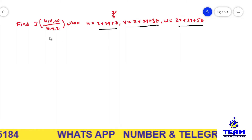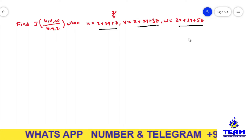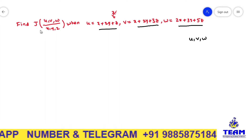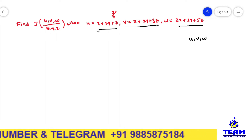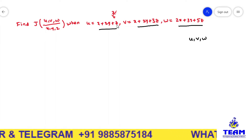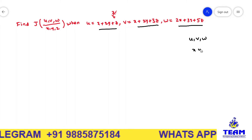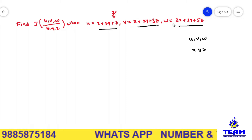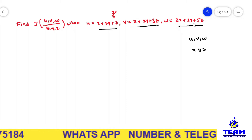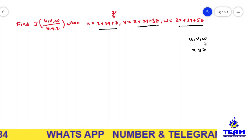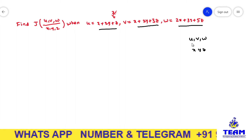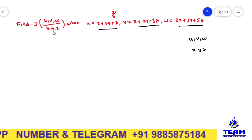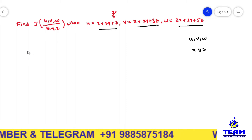So friends, now what we ought to do? For the given u, v, w, we need to find out the Jacobian. Here you observe u is a function of x, y, z; v is also a function of x, y, z; and w is also a function of x, y, z. So you can say u, v, w are functions of x, y, z, and so you can find out the Jacobian.